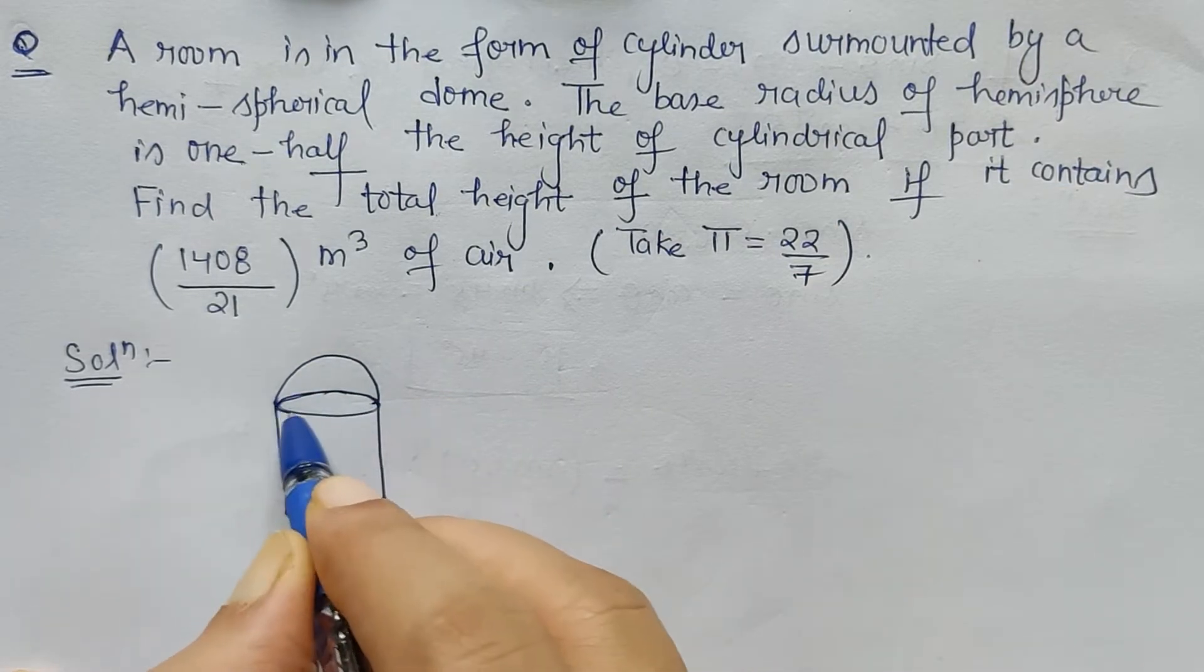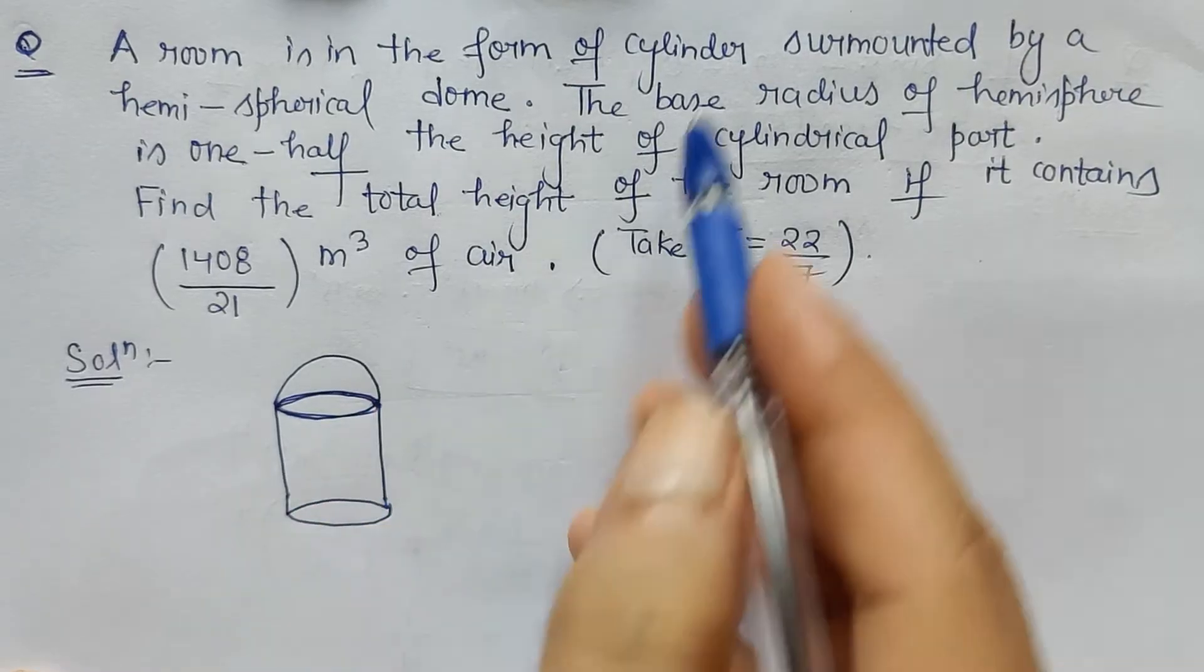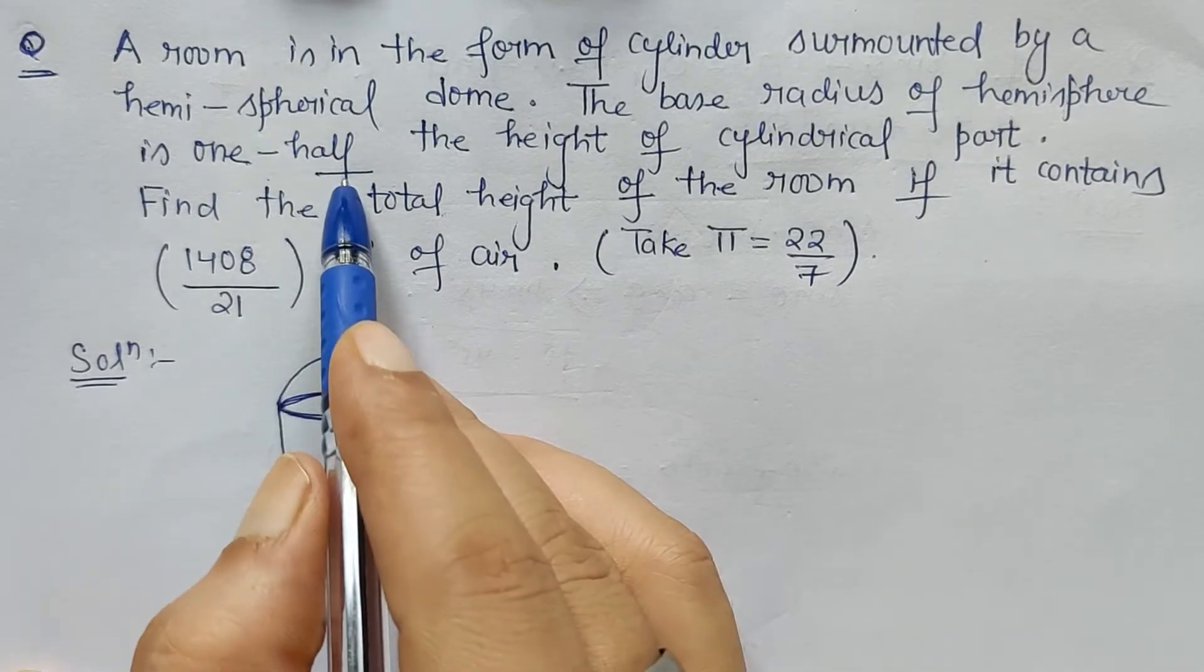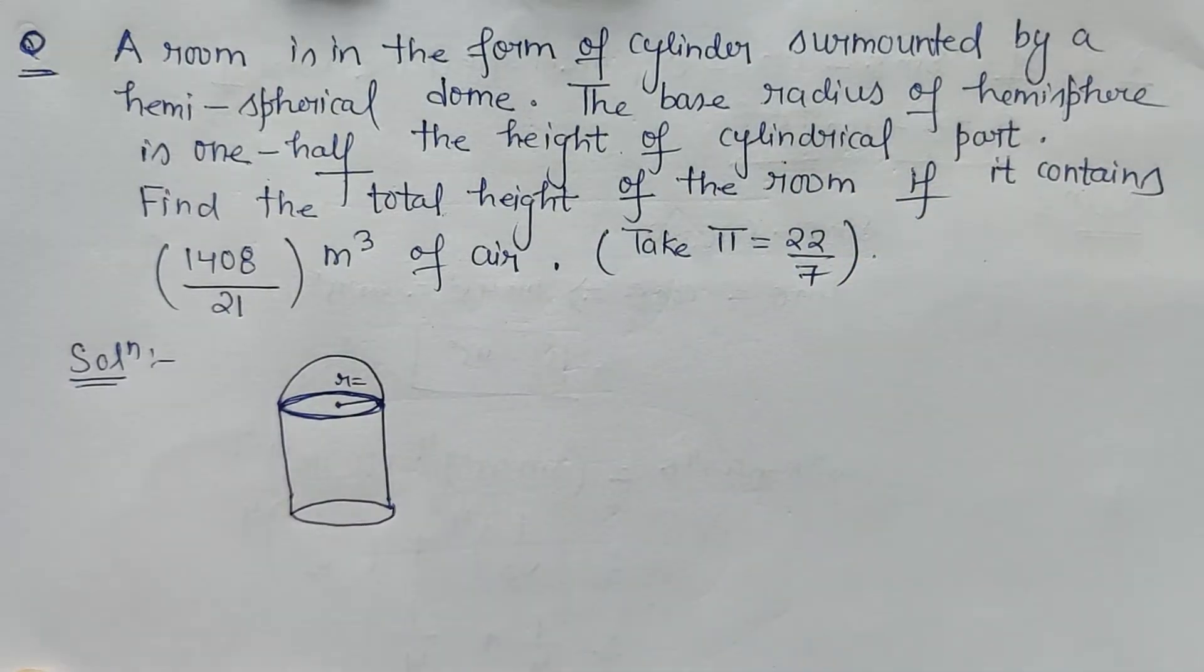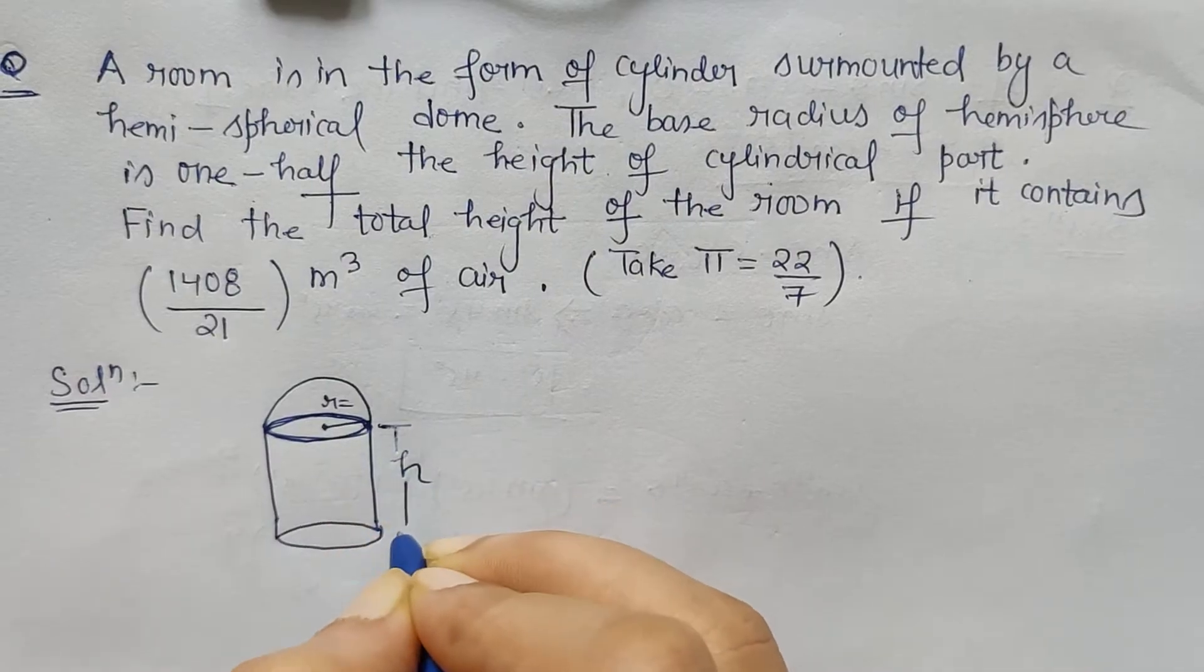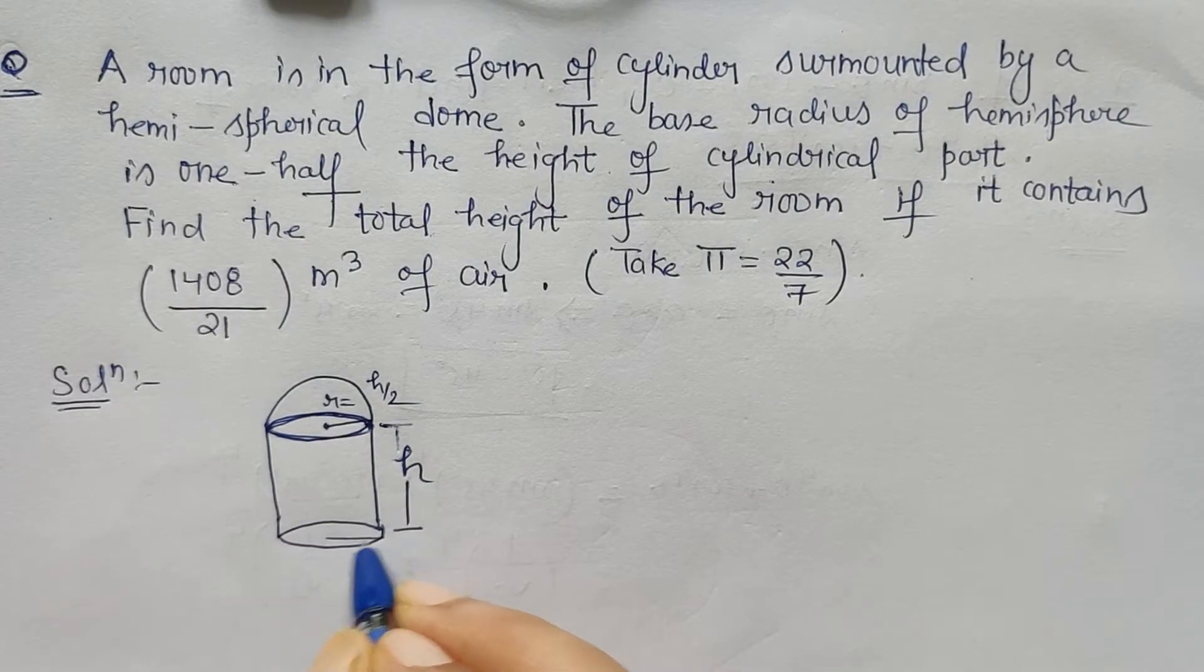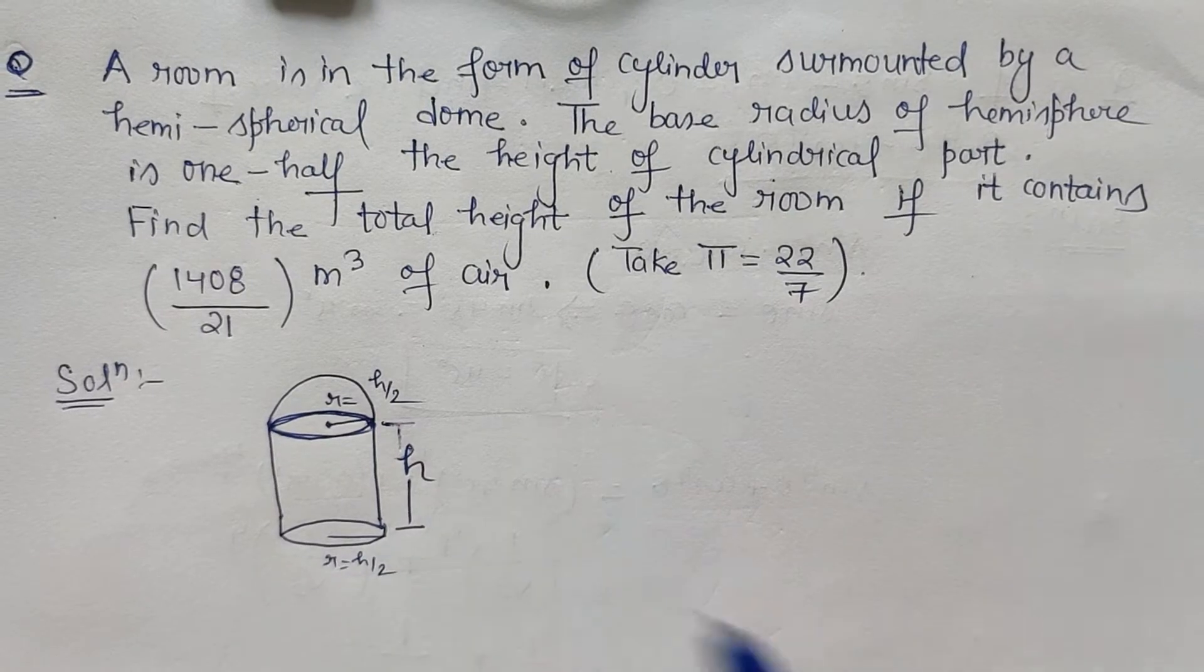The base radius of the hemisphere is one-half the height of the cylindrical part. So if I consider the height of the cylinder as h, then the radius is half of the height, h by 2. Similarly, this is also h by 2.